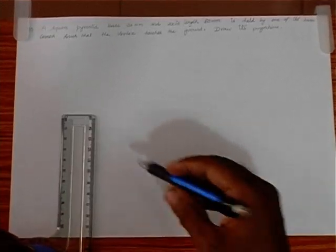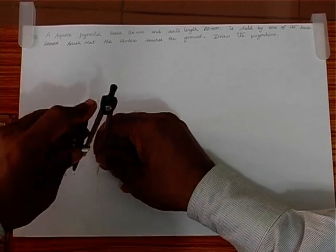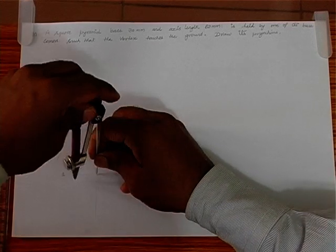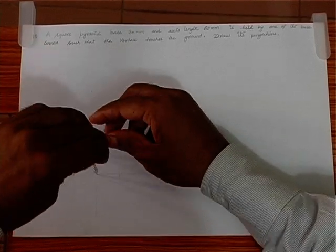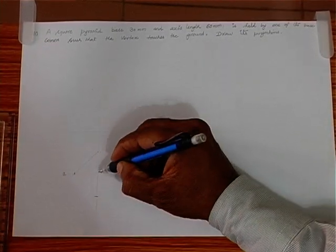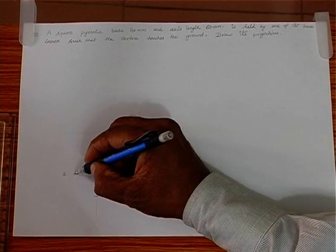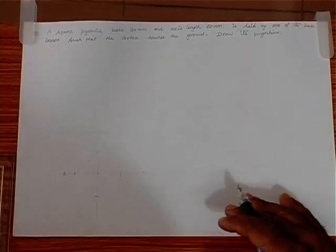Now we just project this — we can project this and get this distance on the right-hand side also. Similarly, we can take this height and place it on the bottom as well. So we are getting a square pyramid in corner position. When we join the center and the corner by a line, it should be strictly parallel to the XY line. So this is the corner position, so we connect this.